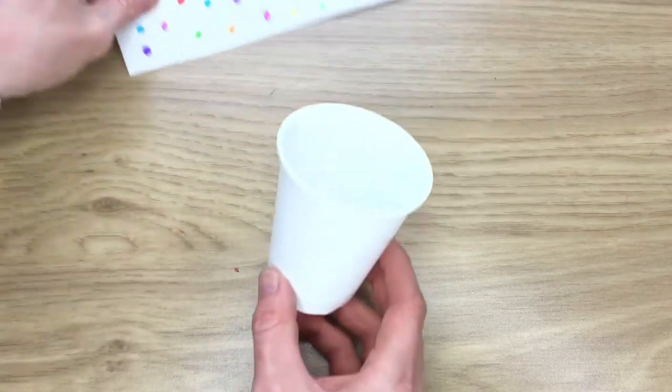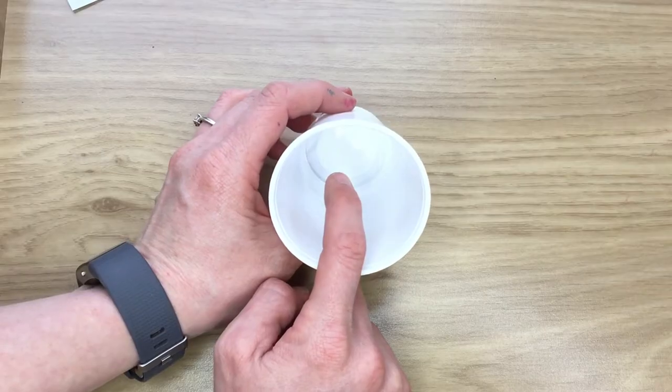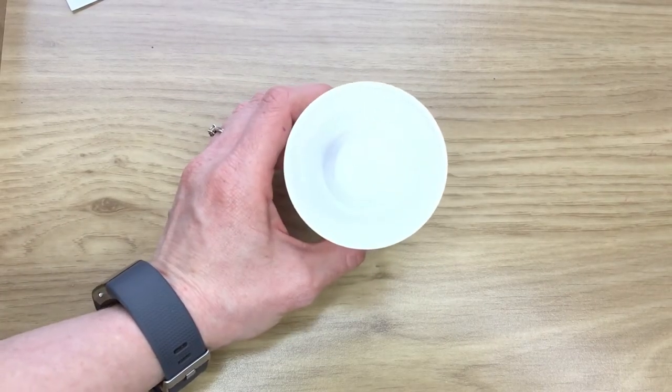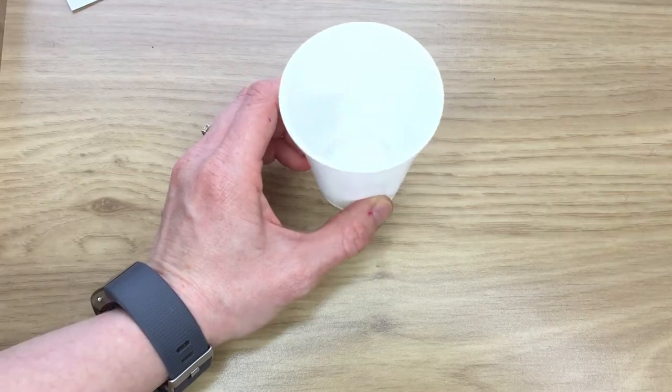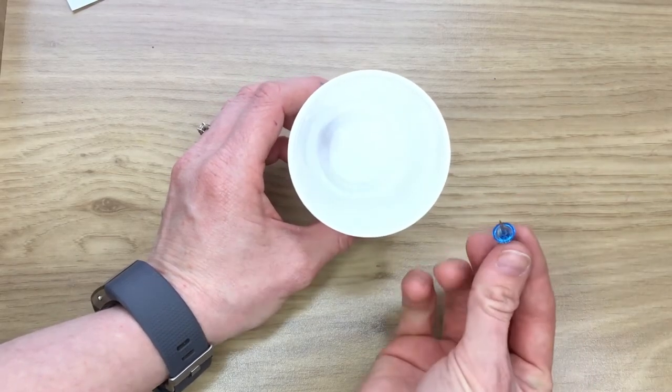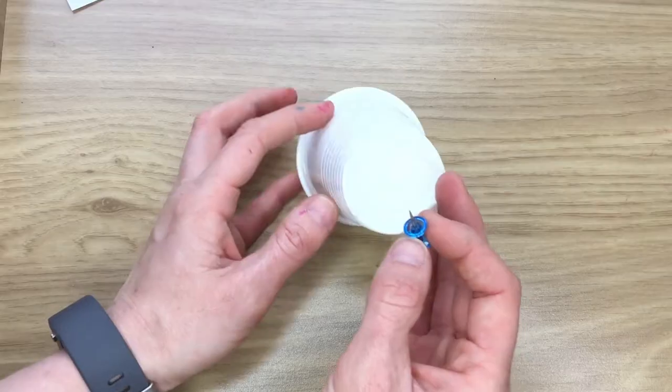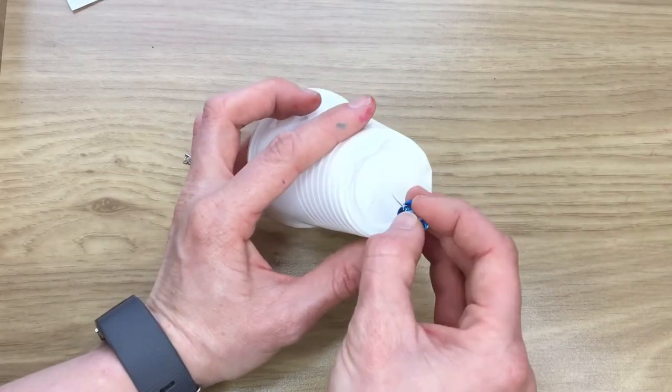Now, before we stick this to the cup, we have to make a hole in the middle, at the bottom. If you watched my previous craft video with the pop-up animal, then you'll know how we did it before. I'm just going to use a drawing pin and you do need to ask an adult to help you with this.